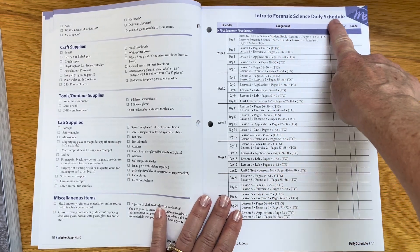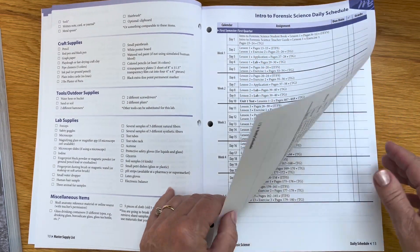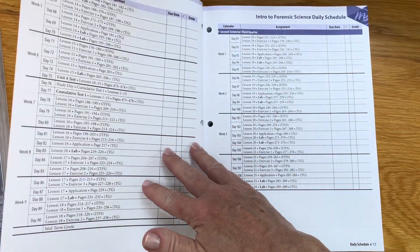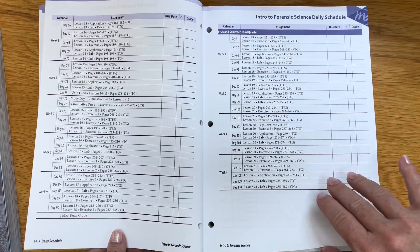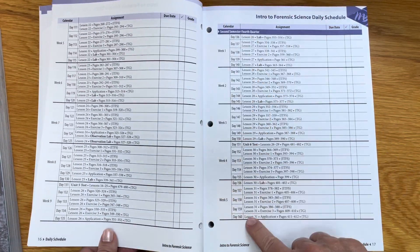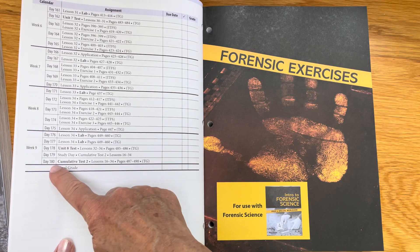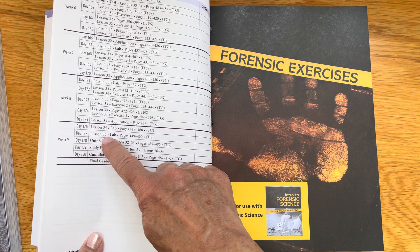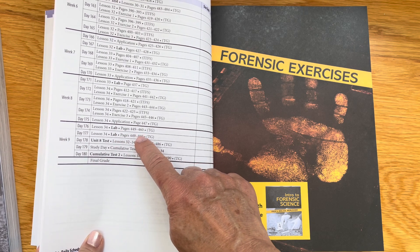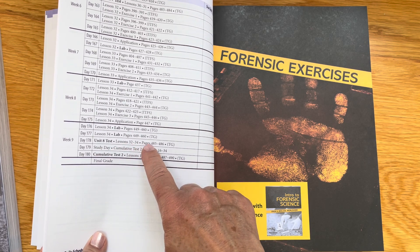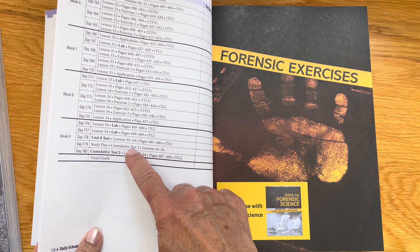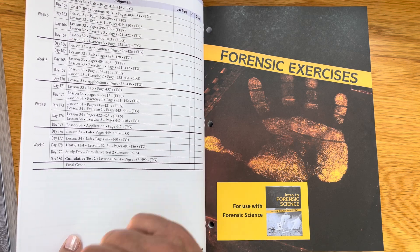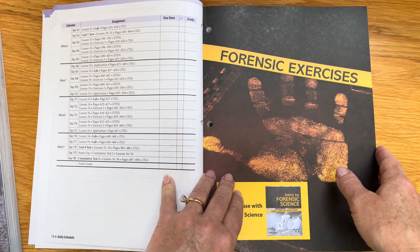This, I like - it gives you the daily schedule. As I said, it's 36 weeks. They break it up into quarters, four quarters or two semesters. You see that for the days there are 180 days worth. Let's just look at the last week. You've got lesson 34, the lab, tells you what pages to read, tells you to take this test. There's a study day and then the cumulative test. That is how you end the course.